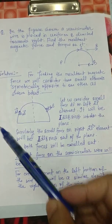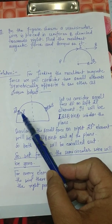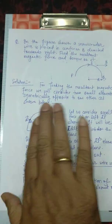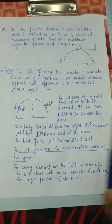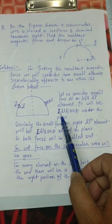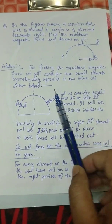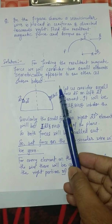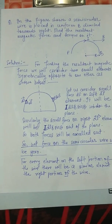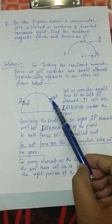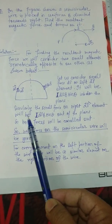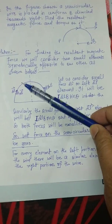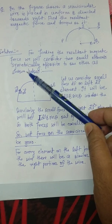Here the magnetic field is making an angle theta with the DL element. To find the direction of the magnetic force, we use the right-hand thumb rule: dL cross B gives a direction into the plane of the paper. The magnitude of this force is I dL B sine theta. Symmetrically, for another DL element on the opposite side, the magnetic force is again I dL B sine theta but directed outward, so both forces cancel each other.